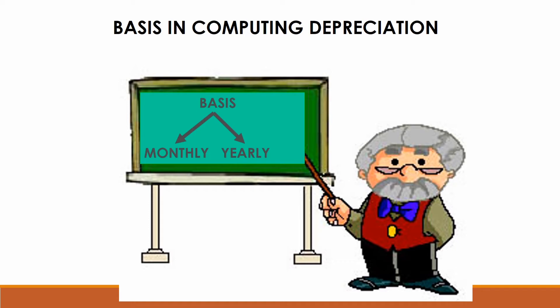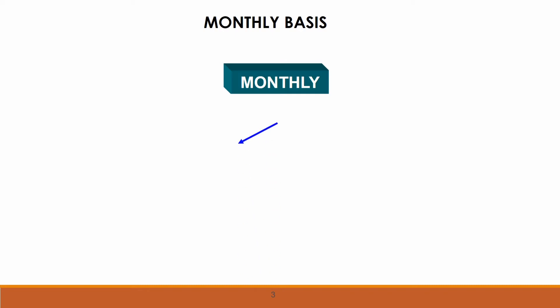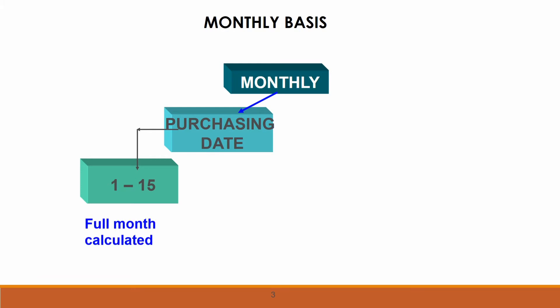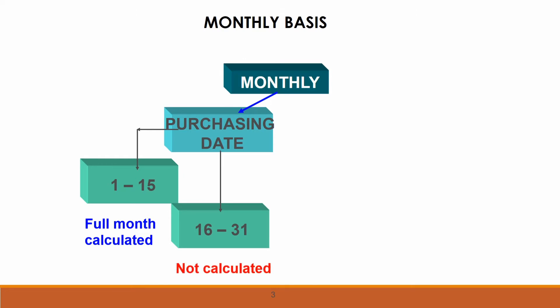When we want to calculate depreciation, there are two bases: monthly or yearly. On a monthly basis, when we purchase a fixed asset, we must calculate depreciation from the date of purchase until the end of the accounting period. From the 1st to the 15th, we calculate a full month; from the 16th to the 31st, we do not calculate for that month.